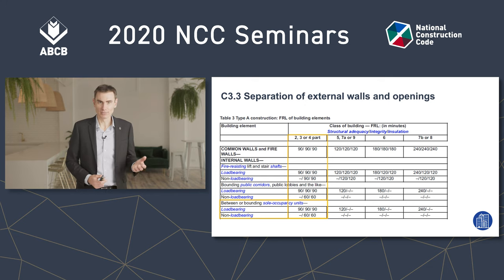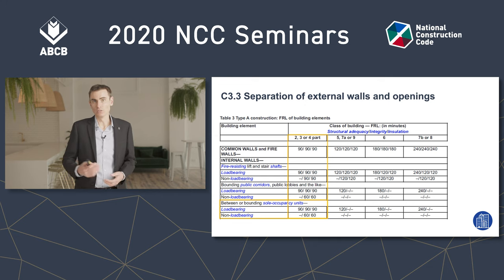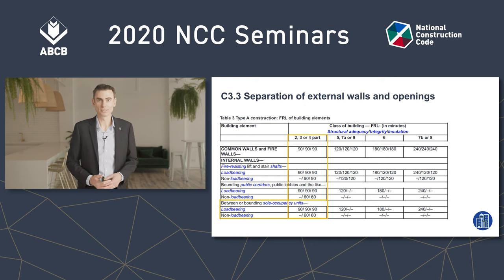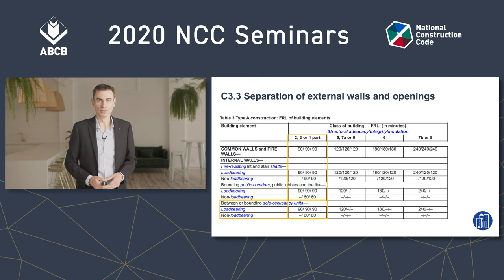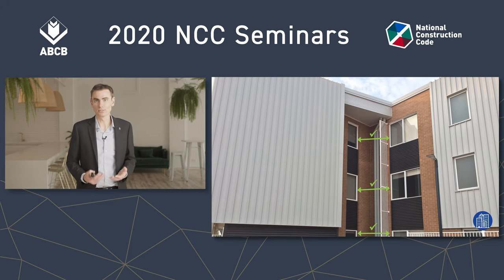As you can see by the highlighted areas in this table, the bounding wall needs to be 90-90-90 if it's load-bearing, or dash-60-60 if it's a non-load-bearing wall. That dash-60-60 is less than the FRL of 90-90-90 required for a firewall, regardless of being load-bearing or not. The SOU units are not fire compartments, so it follows that these windows do not need to be protected from one another at the same storey.